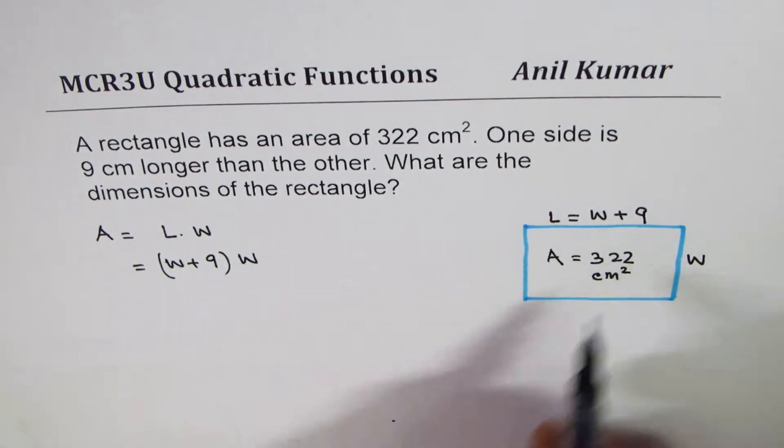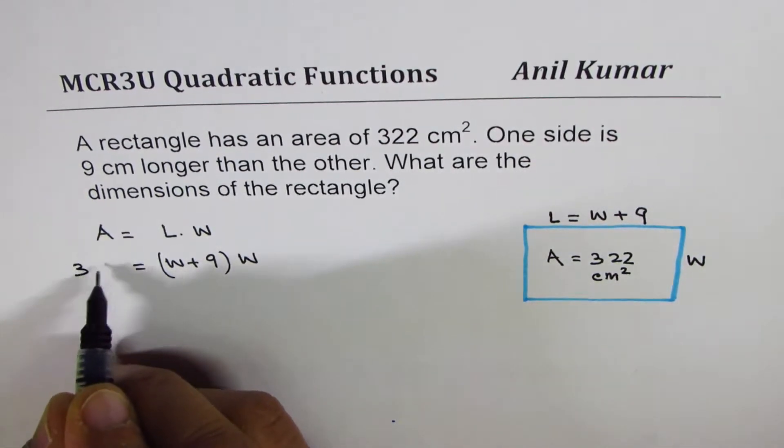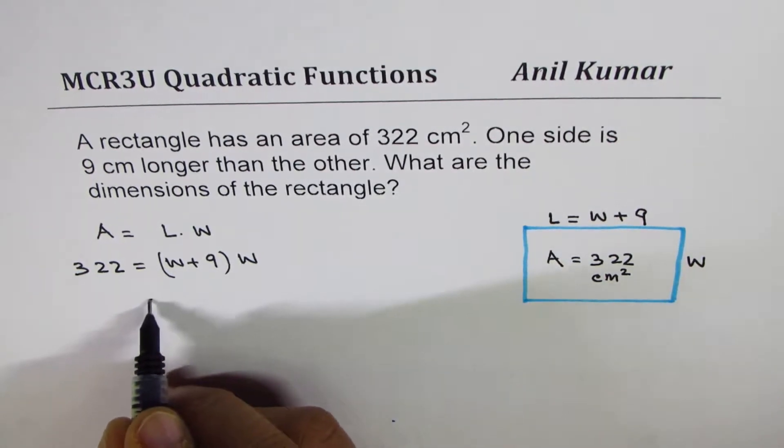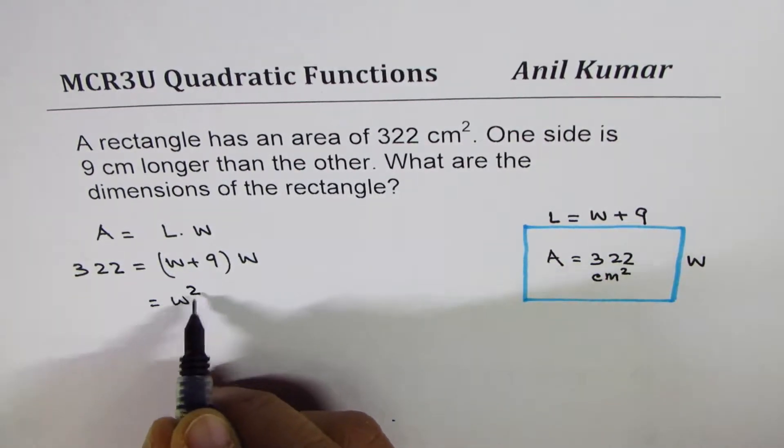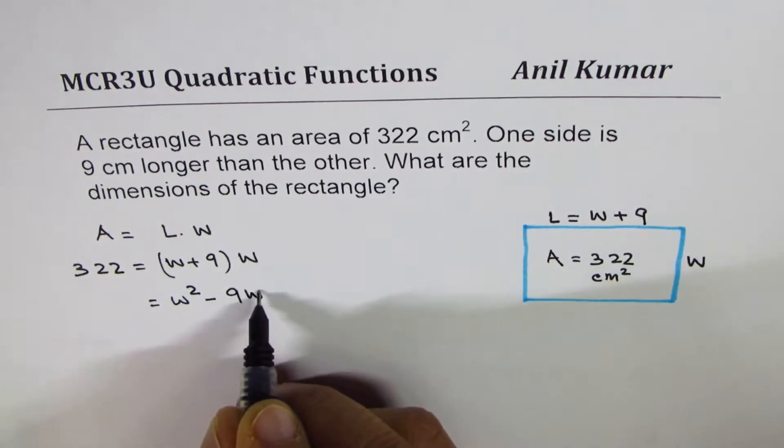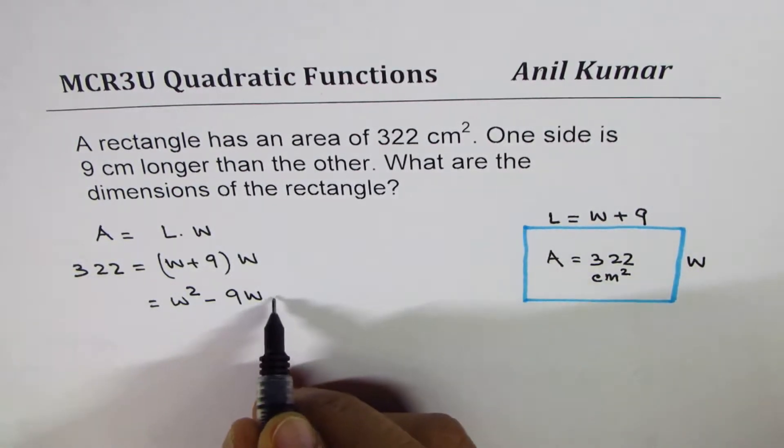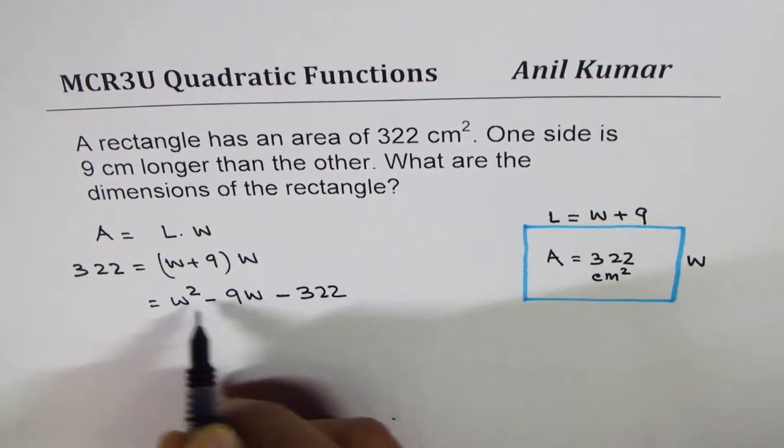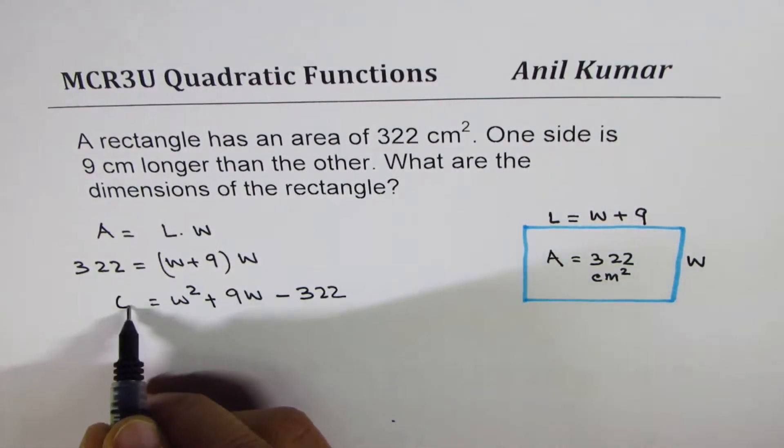If I open this bracket I get W squared plus 9W. Bringing 322 to the right you get minus 322 equals zero. So that becomes the quadratic equation: W squared plus 9W minus 322 equals 0.